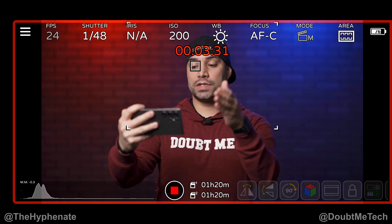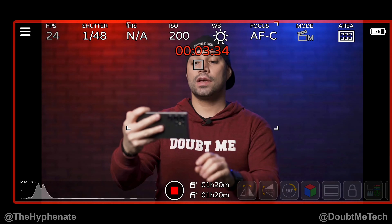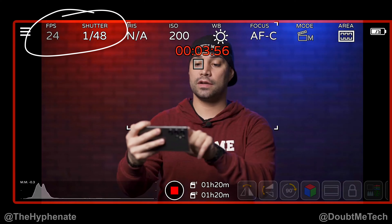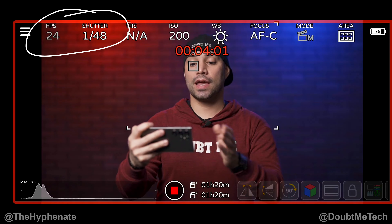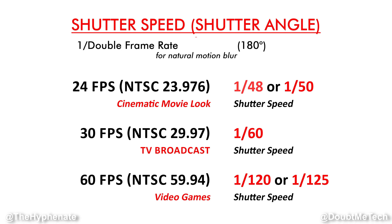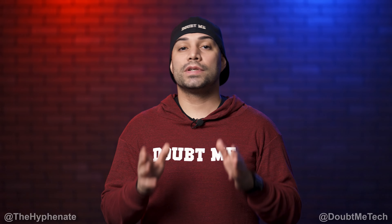Here's a screen recording of my phone controlling my camera. I'm shooting at 24 frames per second and my shutter speed is set to 1/48th of a second — 24 times 2, doubled. Many cameras don't have 1/48th as an option; 1/50th works fine. If you're shooting 30 fps, your shutter speed should be 1/60th. At 60 fps, use 1/120th. If your camera has shutter angle instead of shutter speed, simply set it to 180 degrees — that is the doubling of the shutter speed — and you'll get that natural motion blur.